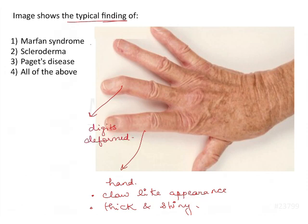So now, what are the options? Marfan syndrome, Scleroderma, Paget's disease, and all of the above. Now, a very likely chance of this answer being 'all of the above' is high, because most of us would think that these are all diseases of bones and joints, and the features here are also of bones and joints.